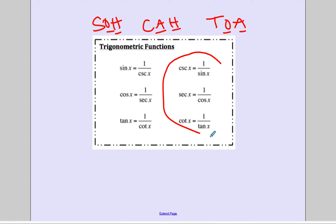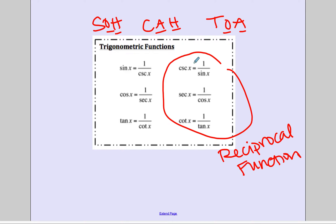And then we have all of our reciprocal functions. The reciprocal of sine is cosecant — so cosecant is one over sine. The reciprocal of cosine is secant — so it's one over cosine. People tend to think sine and secant are reciprocal functions, but you have to remember you flip the front letter: sine goes with cosecant, cosine goes with secant. Tangent and cotangent are pretty easy to remember they go together.